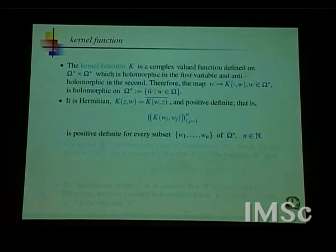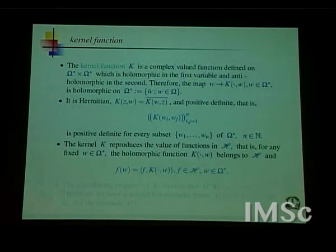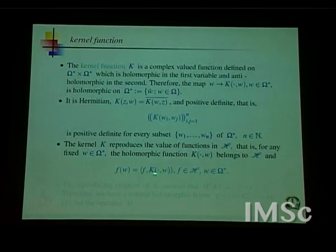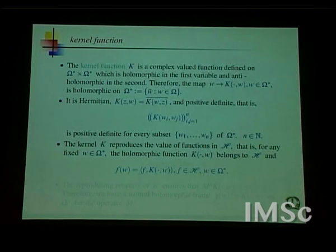Saying that K is a reproducing kernel means that this function of two variables, when you plug in an arbitrary set of points w₁ through wₙ, gives a positive definite object — that's what it means for it to be a positive definite kernel. Then the reproducing property means that ⟨f, K(·,w)⟩ = f(w): for each fixed w, K(·,w) is an element in the Hilbert space, and the inner product gives f evaluated at w.